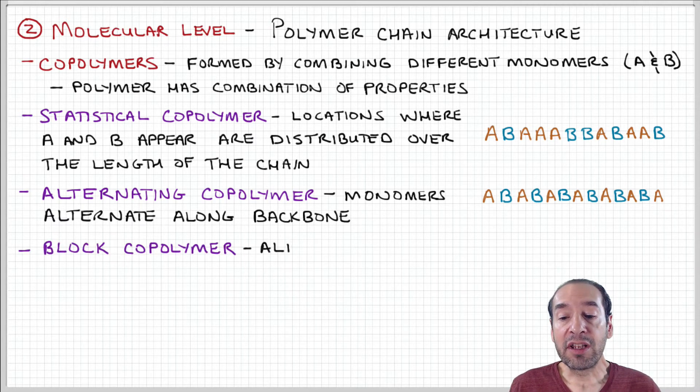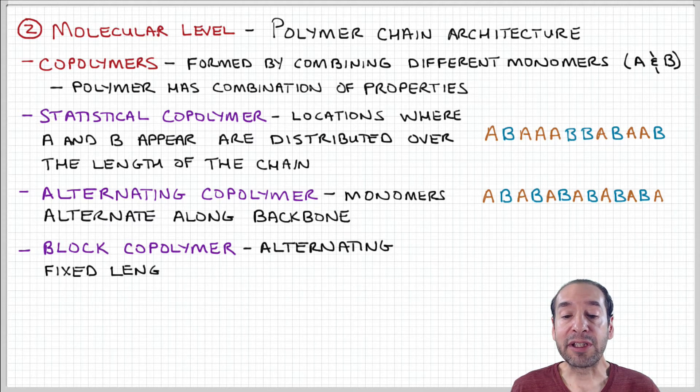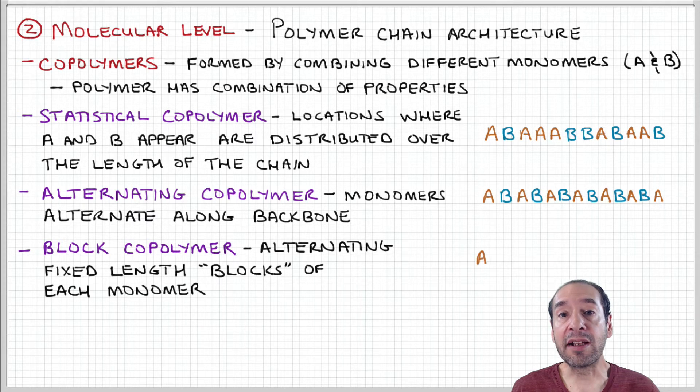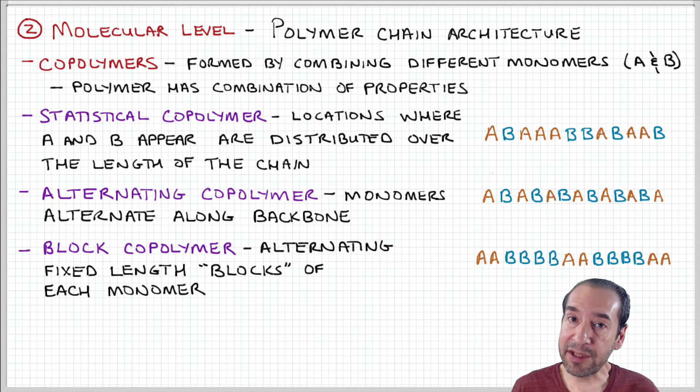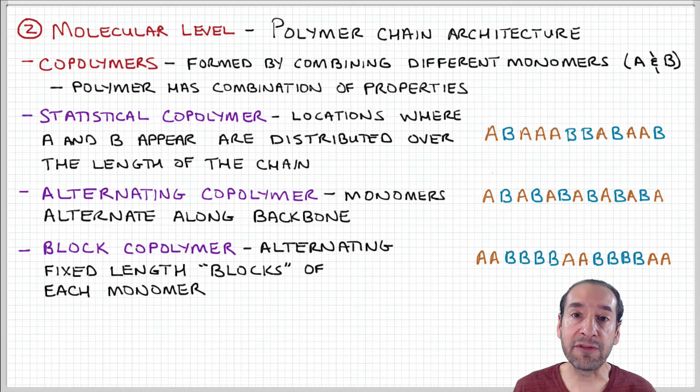A block copolymer is an example of what I've just talked about, alternating fixed length segments or blocks of these monomer units. They don't have to be the same length, they could be different lengths, depending on the stoichiometry and the nature of the interactions that you want to take advantage of between these two different components.